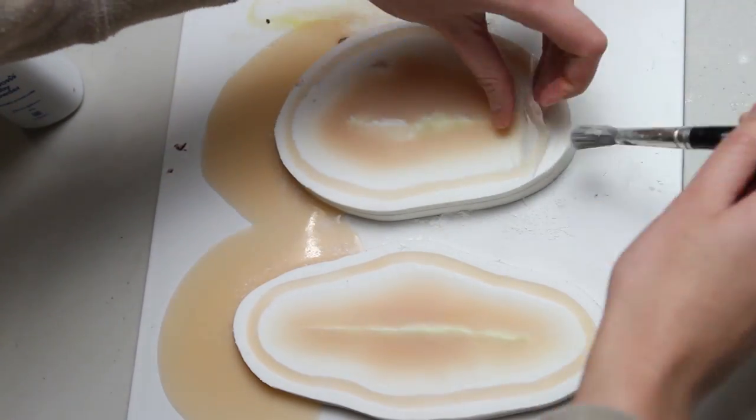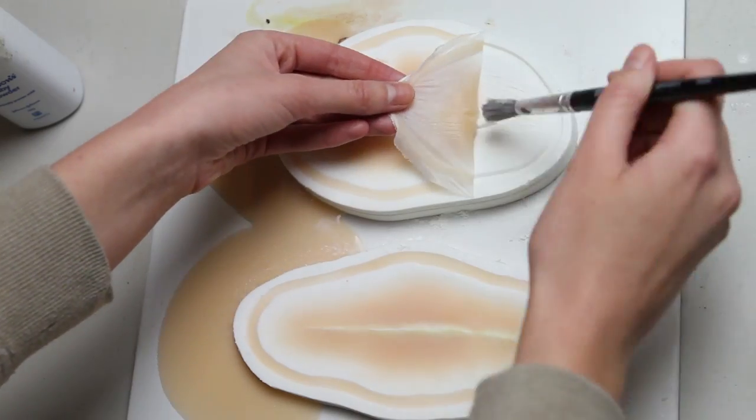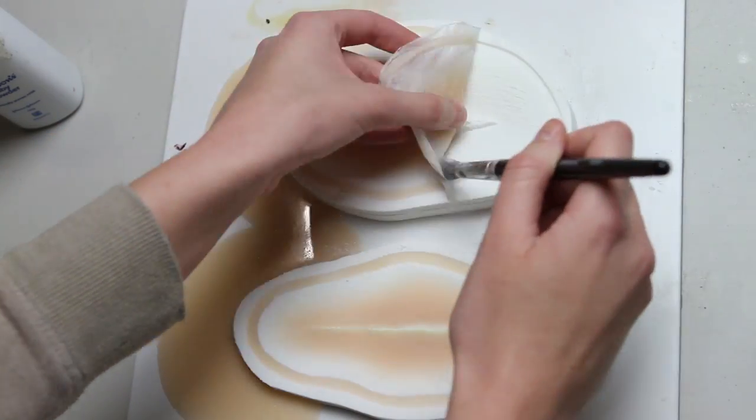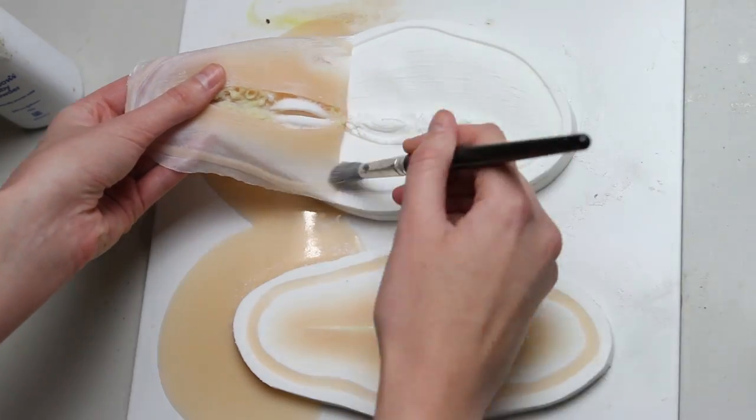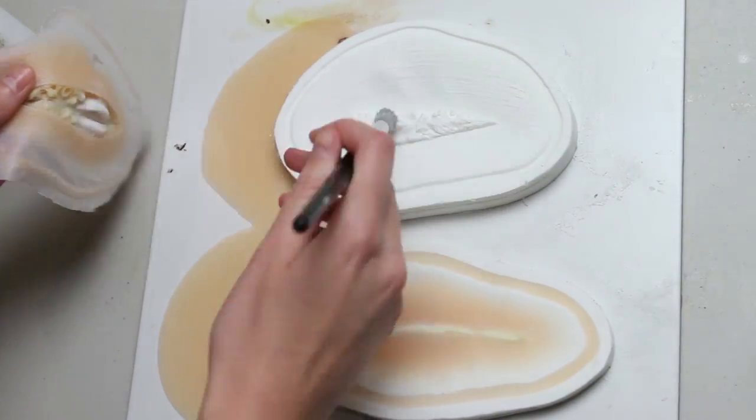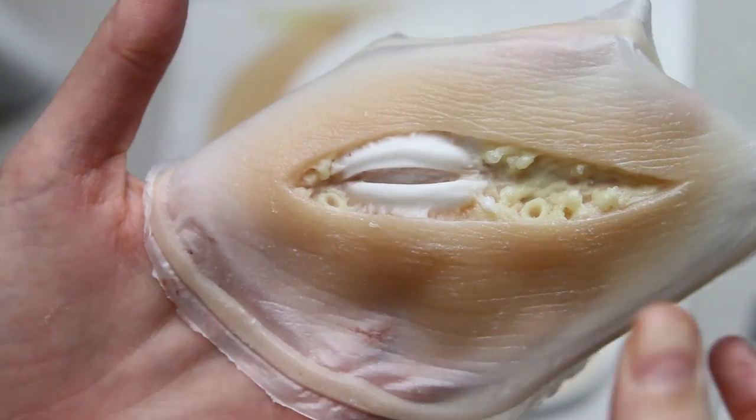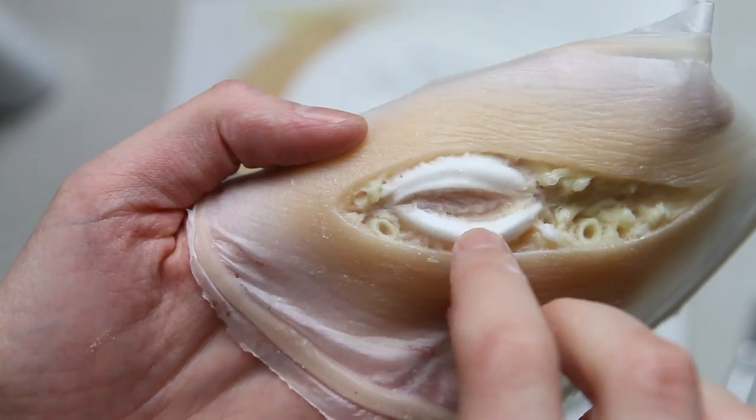Once this is cured, it usually takes about half an hour. Sometimes I put it underneath the heater because it will help it cure faster. You're going to use baby powder, and you're going to baby powder the back of it. Then I'm going to use a soft brush and baby powder to gently pull the silicone piece out of the mold.